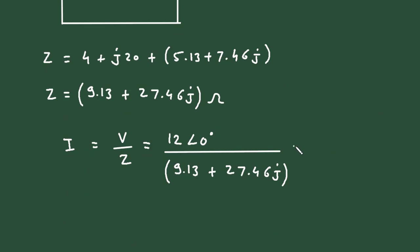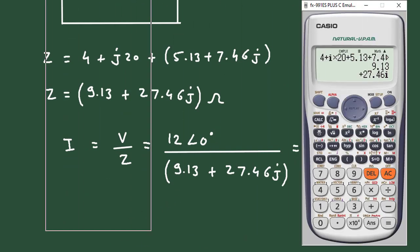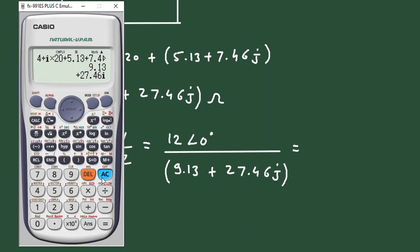We can directly solve this in calculator: 12 at an angle 0 divided by 9.13 + 27.46j.